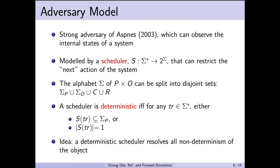We will consider a particular type of scheduler called a deterministic scheduler. To define this, we must first distinguish the different types of actions our client-object system can allow. The alphabet can be split into four disjoint sets: sigma p, the actions of the client program; sigma o, the internal actions of the library; c, the actions that call an operation of the library; and r, the actions that return from that library operation.